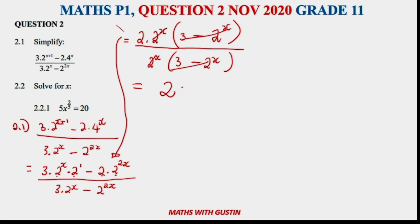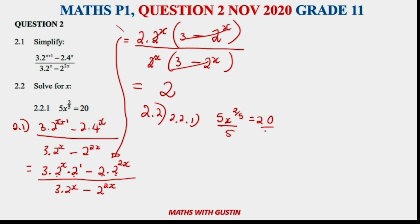That's how you deal with 2.1 — stick to the basics. Let's move on to 2.2.1: solve for x, where 5x to the power of two-fifths is equal to 20. We need to isolate x, so first multiply both sides by 5, giving x to the power of two-fifths equals 4.